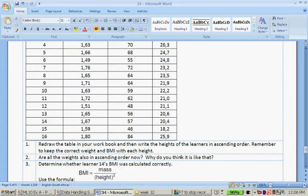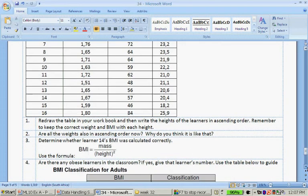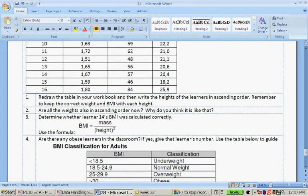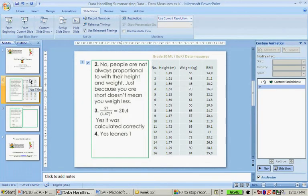Are all the weights also in ascending order? Why do you think it's like that? Determine whether learner number 14's BMI was calculated correctly. Use the formula BMI is equal to mass divided by the height squared.